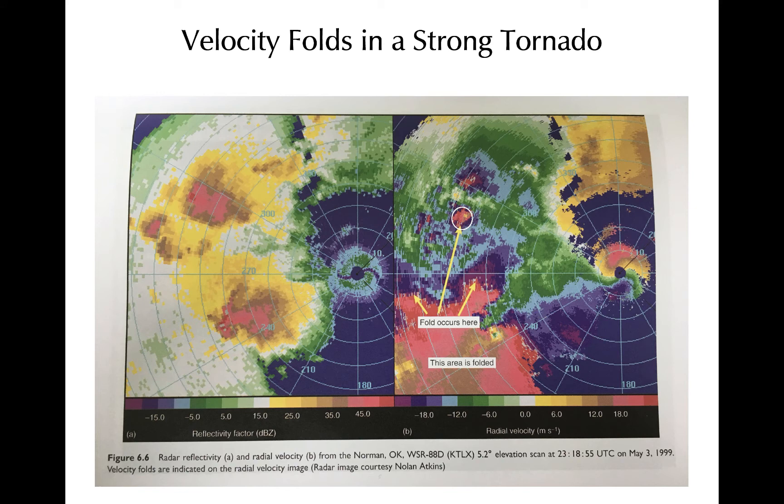Another common example of velocity folding occurs in tornadoes. In strong tornadoes, folding can even occur with S-band radar. Again, reflectivity and radial velocity are respectively at left and right. This example is from May 3, 1999, the day a powerful tornado struck Moore, Oklahoma. In our radar lab for this course, we'll look at radar data from an EF-5 tornado that also occurred in Moore and followed a similar track on May 20, 2013.